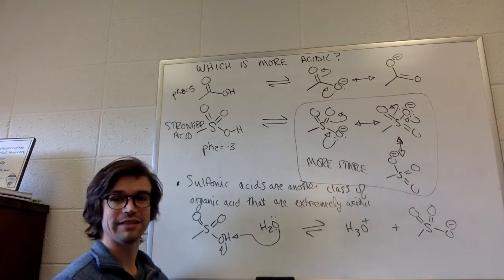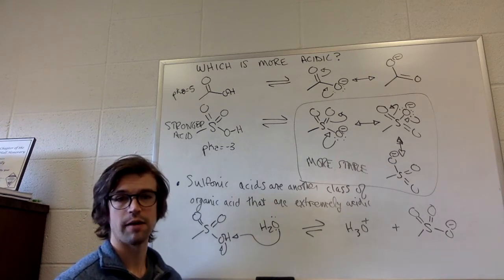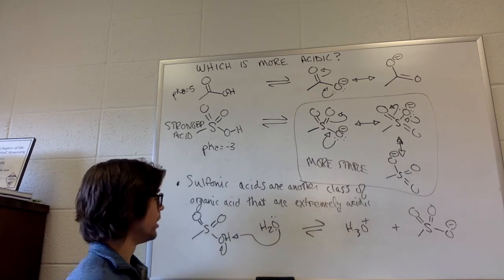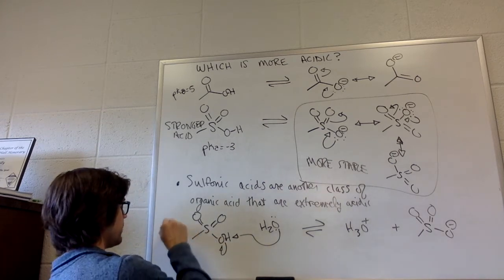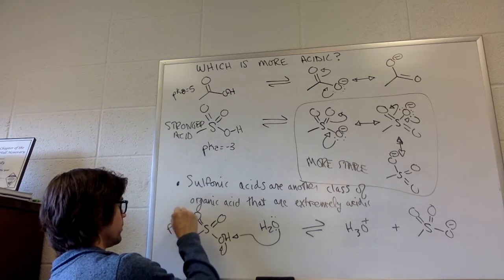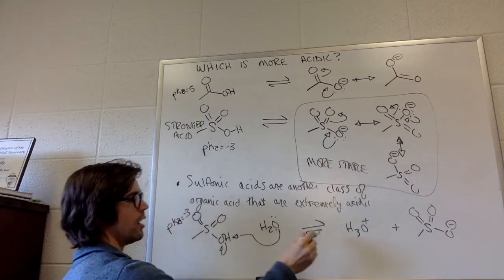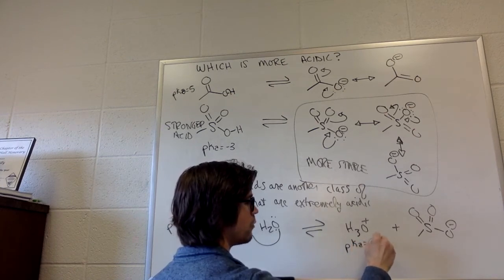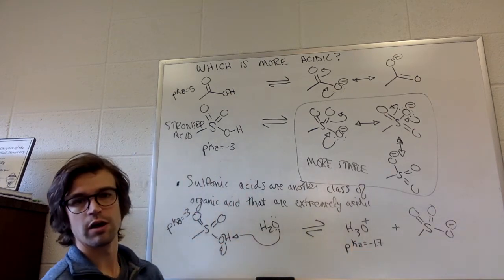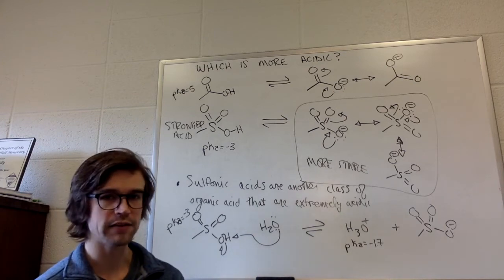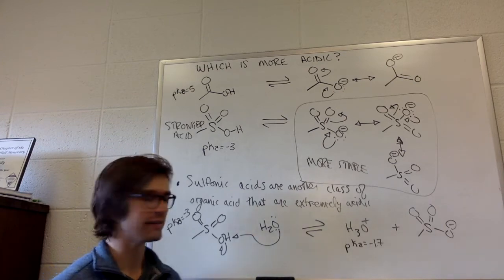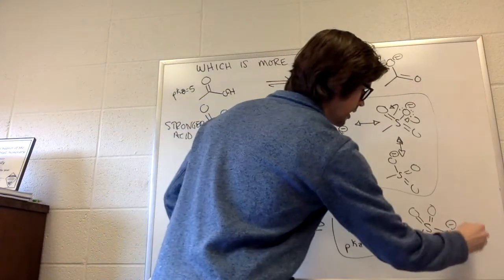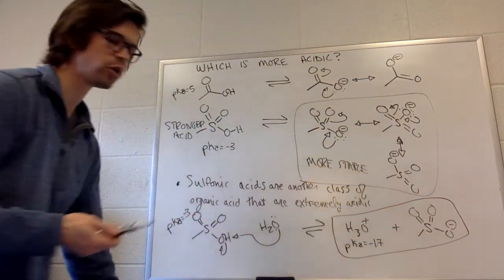So, which side of this equilibrium is favored? It's something that we need to be able to do. Well, this has the pKa of negative 3. Hydronium ion, that's one that we know, has the pKa of negative 1.7. So, the equilibrium moves away from the more reactive species, from the stronger acid. This is the stronger acid. So the equilibrium is over here.